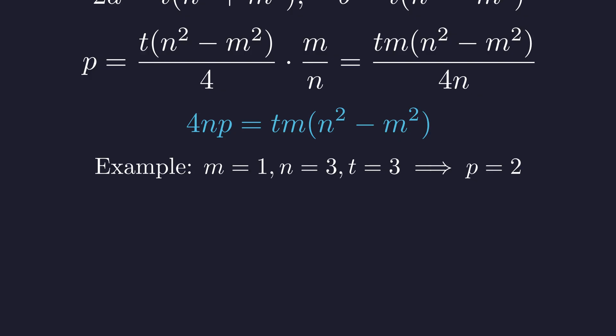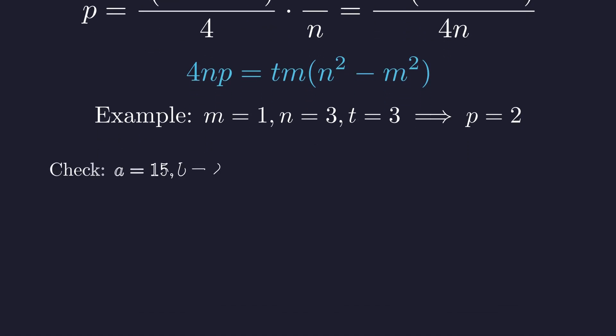Let's verify with an example. When m equals 1, n equals 3, and t equals 3, we can check our Diophantine equation. 4 times 3 times p equals 3 times 1 times 9 minus 1, which gives us 24 equals 24 for p equals 2. Perfect!